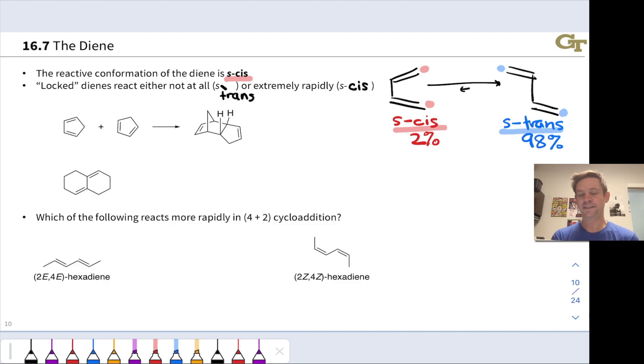There are some dienes that are actually locked in either the S-cis or the S-trans conformation, and these locked dienes either don't react at all if the diene is locked in an S-trans conformation, or react extremely rapidly if they're locked in that reactive S-cis conformation, indicating that there is zero of the S-trans and 100% S-cis.